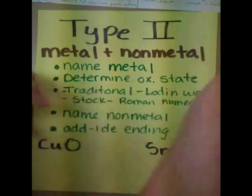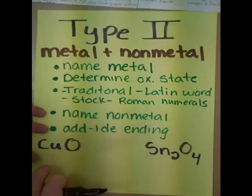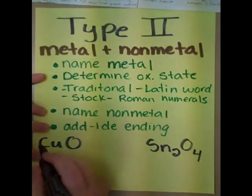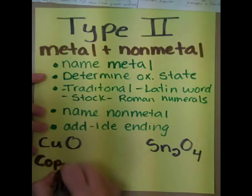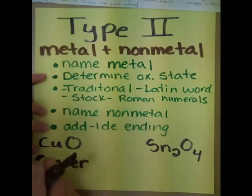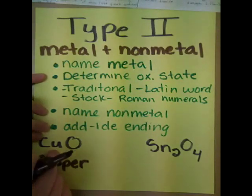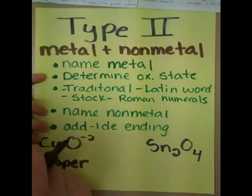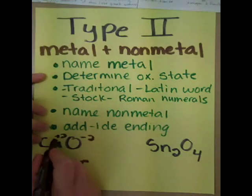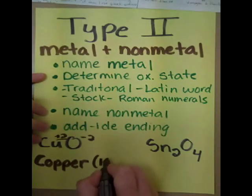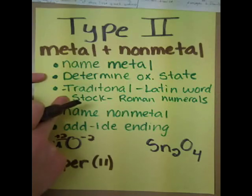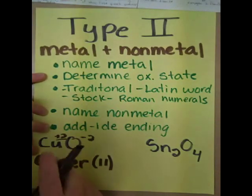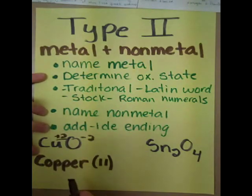For example, copper has varying oxidation states. So we start by naming our metal, copper. The oxidation state here is 2+, because oxygen always has a negative 2, so copper must be plus 2. Using the stock system, we use Roman numerals, giving us copper(II), and then we name our non-metal oxygen with the -IDE ending as oxide.